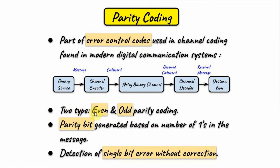There are two types of parity coding: even and odd parity coding. In this tutorial, we will focus on even parity coding. The parity bit, which is generated by the channel encoder and added to the message, is obtained by counting the number of ones in the message. If the number of ones is even, then the parity bit is zero. If the number of ones is odd, then the parity bit is one. The objective is to have a codeword which has an even number of ones.